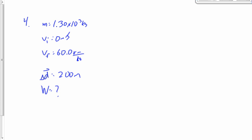And finally, number four says a 1,300-kilogram car begins at rest. I'm going to write down some givens for this one. A 1,300-kilogram car begins at rest. That's going to make VI equal to zero meters per second. It accelerates to a speed of 60 kilometers per hour over a distance of 200 meters. That would mean our displacement is 200 meters. Find the work done.